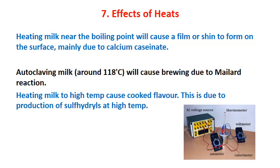Now we will see the effect of heat on milk. Heating milk near the boiling point causes a film or skin to form on the surface, mainly due to calcium caseinate. Autoclaving milk at around 118 to 120 degrees Celsius causes browning due to the Maillard reaction, where protein and sugar undergo a reaction at high temperature. Heating milk to high temperatures also causes cooked flavor due to production of sulfide compounds, and causes coagulation of proteins through denaturation.